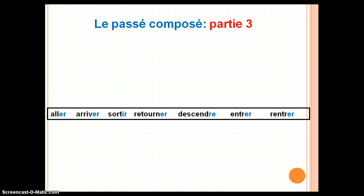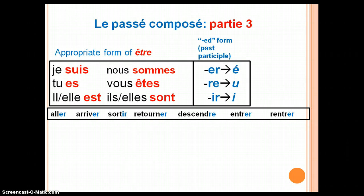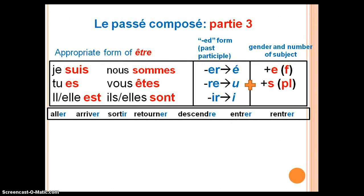To create stage three of le passé composé, instead of the appropriate form of avoir, you need the appropriate form of être. Then you still need the past participle of your verb, and these verbs follow the pattern of er to é (accent aigu), re to u, and ir to i. Additionally, with stage three, you must make your past participle agree in gender and number with the subject, by adding an e if the subject is feminine, and/or an s if the subject is plural.